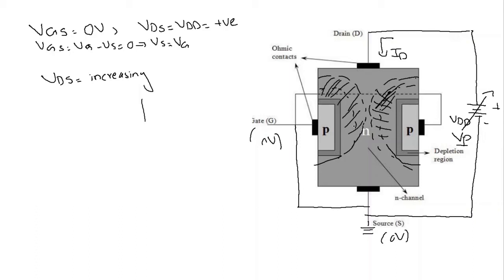Why do they not touch each other? Because if they did touch, the current Id flowing here would be zero. If Id is zero, that implies zero volts at the drain, and we also have zero volts at the gate and source terminals. In that case there would be no reverse biasing, and with no reverse bias the depletion region would never become wider at the top. So the pinch-off phenomenon would not occur — this disproves the hypothesis that the regions actually touch. Therefore Id never becomes zero.